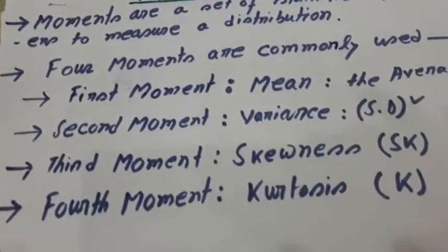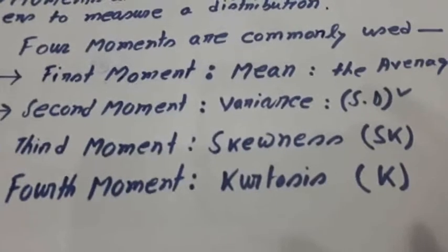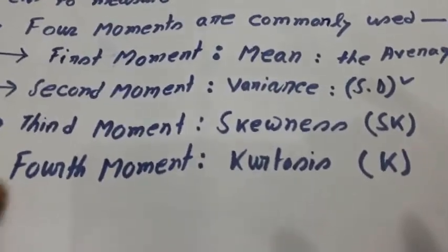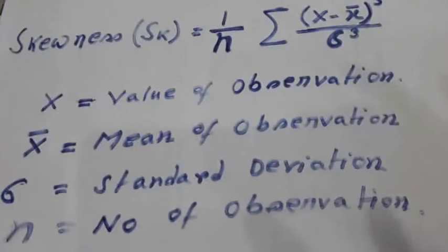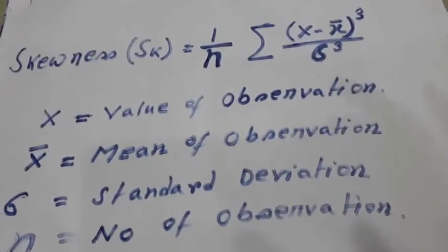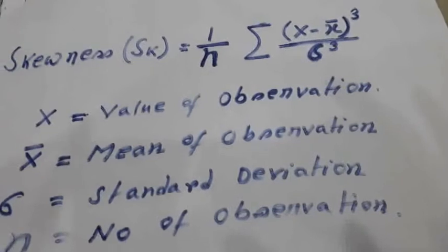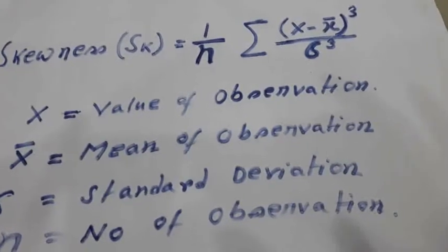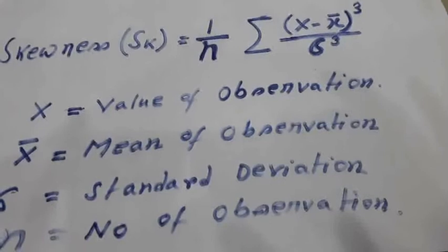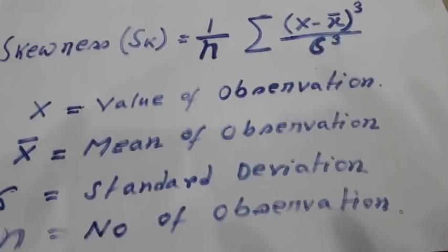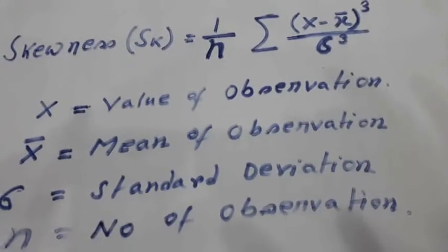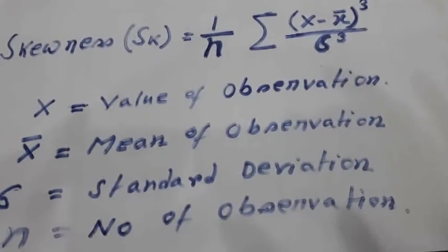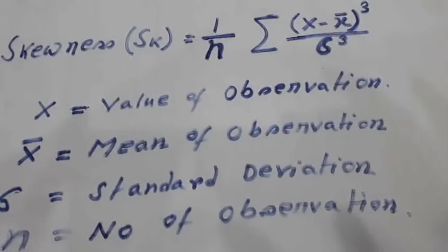Third moment which is commonly used is called skewness, which is denoted by SK. Skewness is defined by this formula: 1 by n summation x minus x bar whole cube divided by sigma cube. Here, sigma represents the standard deviation and x bar represents the mean of the observation.